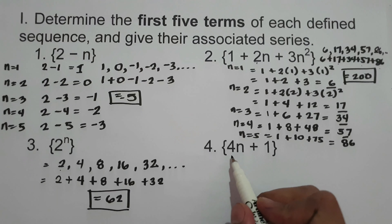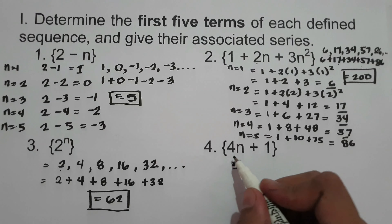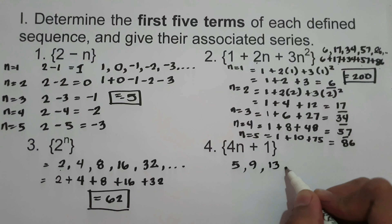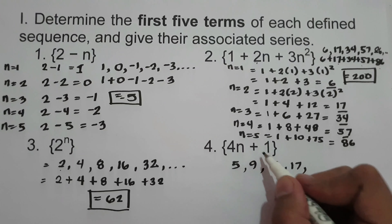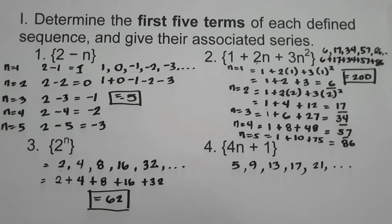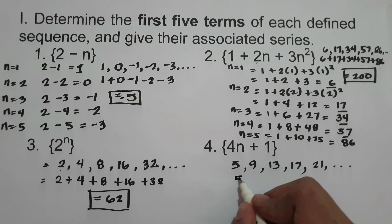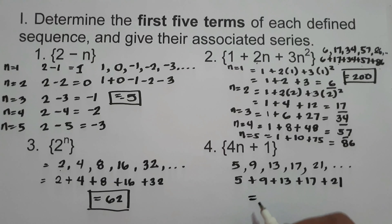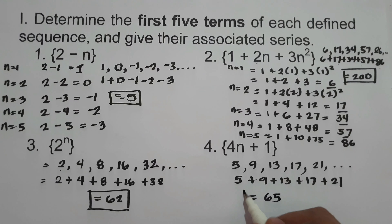Example 4: 4n + 1. For n = 1: 4(1) + 1 = 5. For n = 2: 4(2) + 1 = 9. For n = 3: 4(3) + 1 = 13. For n = 4: 4(4) + 1 = 17. For n = 5: 4(5) + 1 = 21. So the sequence is 5, 9, 13, 17, 21. The associated series is 5 + 9 + 13 + 17 + 21 = 65.